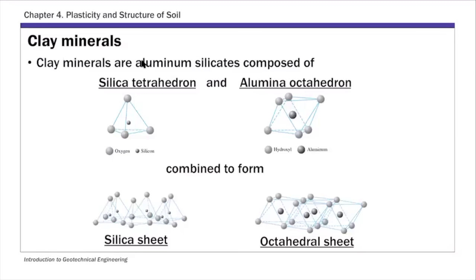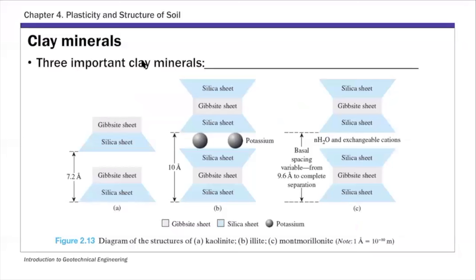And in terms of types of clay minerals, there are really three most common ones that you should know. The first one is illite. It's actually shown on this slide here. And the second one is kaolinite. And the third one is montmorillonite. So these are the most common types of clay minerals.